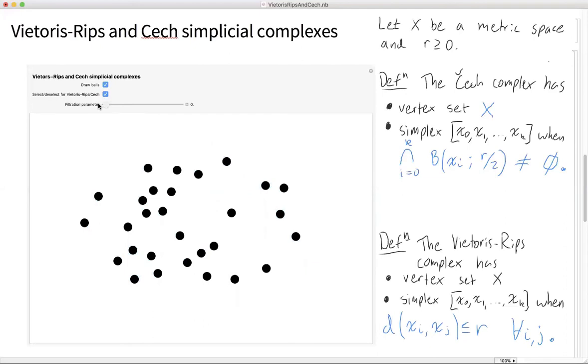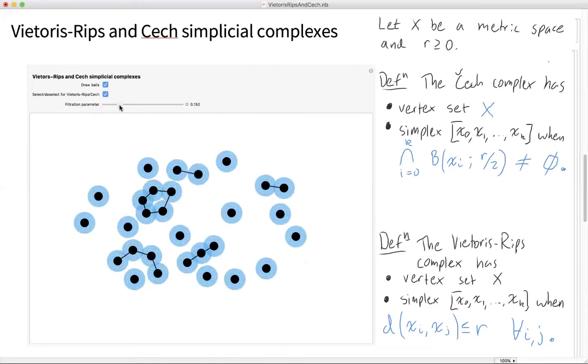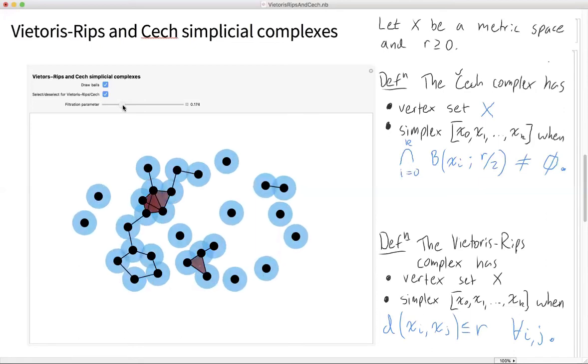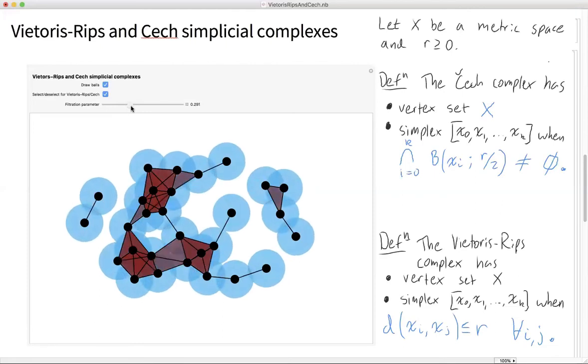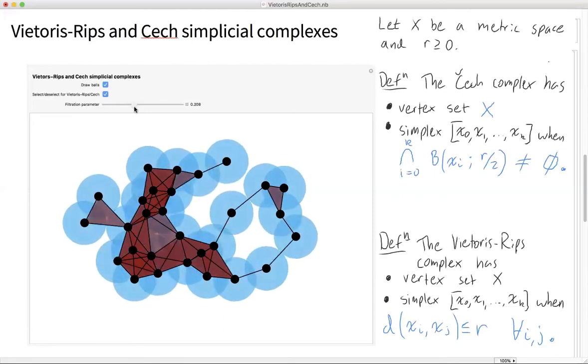So in much the same way as we increase the scale parameter r, the Vietoris-Rips complex is growing. Once you have two points within distance r, you have edges. Once you have three points which are pairwise within distance r, then you have triangles. And we've highlighted the main difference between Vietoris-Rips and Čech. In Vietoris-Rips, you have this triangle as soon as all of the edges appear. Whereas in Čech, the edges might appear before the point of triple intersection, giving the triangle.